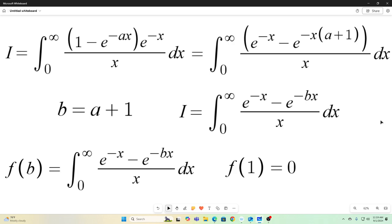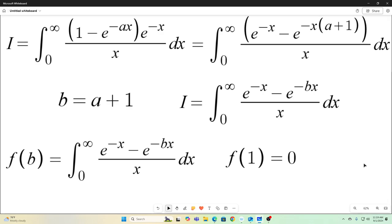And we'll also note that if we evaluate our function b at the point b equals one, we just get zero because we'd end up with e to the negative x minus e to the negative x in the numerator of that integrand. So the whole thing would evaluate to zero.